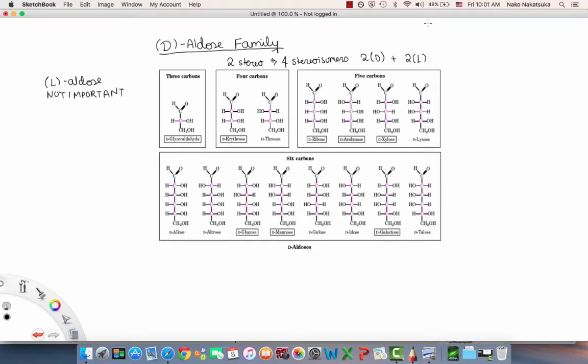Remember that when you have a certain number of stereocenters of N, you can find the number of stereoisomers is two to the power of N. That's why the more carbons you have, the more different molecules we have, because we have more combinations of stereoisomers that we can talk about.